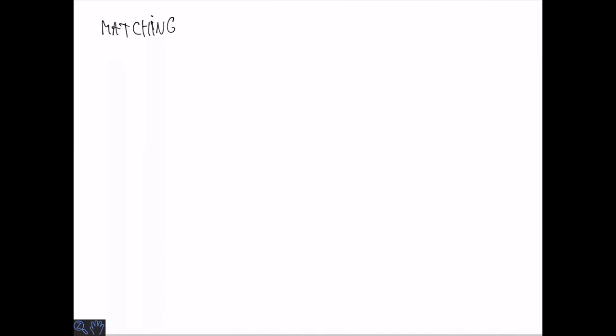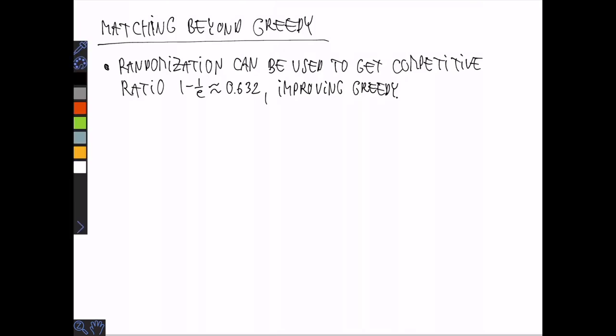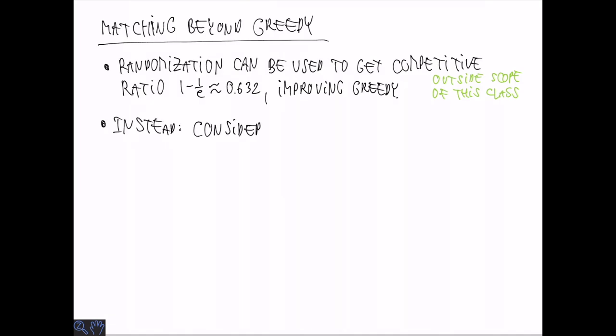So a competitive ratio of one-half is the best we can hope for deterministic algorithms, and we have a simple algorithm that matches it. Of course, you might wonder whether randomization can be used to get something better, to get a competitive ratio that is strictly above one-half. It turns out that it is actually possible to get a competitive ratio of approximately 0.632, which is one minus one over e. Unfortunately, this is too complicated or too big a topic to cover in this class, but instead we will cover a related result that kind of contains the gist of the result, which is about fractional matchings.